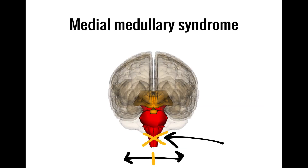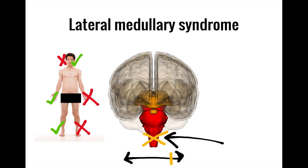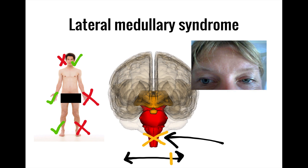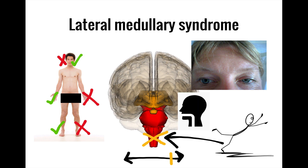In contrast to medial medullary syndrome, lateral medullary syndrome involves loss of protopathic sensation contralaterally in the extremities and ipsilaterally in the face, ipsilateral Horner syndrome, problems with balance including ataxia, vertigo, and nystagmus, and difficulties with both speaking and swallowing.